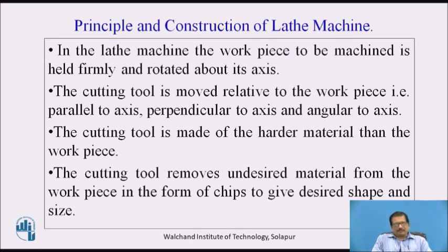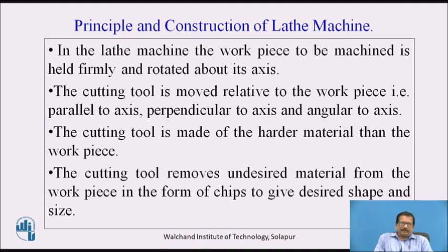Now we will study the lathe machine — its principle of working and construction. In the lathe machine, the workpiece to be machined is held firmly and rotated about its axis. The spindle of the machine rotates, on which a fixture (chuck) is mounted to hold the workpiece, making the job rotate along its own axis. The cutting tool moves relative to the workpiece — parallel, perpendicular, or angular to the axis. The cutting tool is made of harder material than the workpiece, such as HSS, carbide, or diamond.